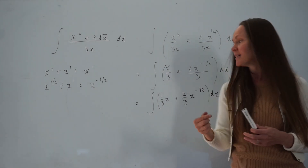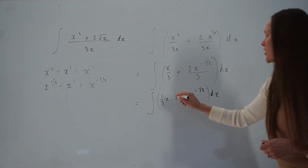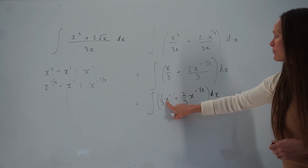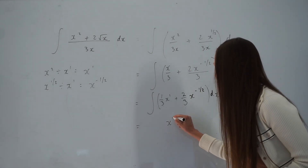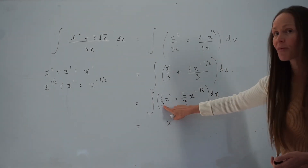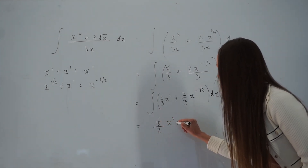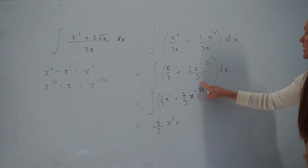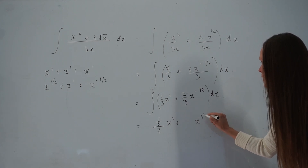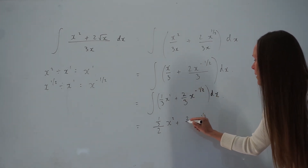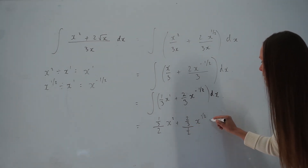When we're integrating, we raise the power on x by 1 and divide by the new power. For the first term, raising the power by 1 leaves x squared, and we're dividing one third by the new power 2, so one third divided by 2. For the next term, adding 1 to negative one half gives positive one half, so x to the power of one half, and we divide 2 thirds by the new power one half. Not forgetting to add constant c.